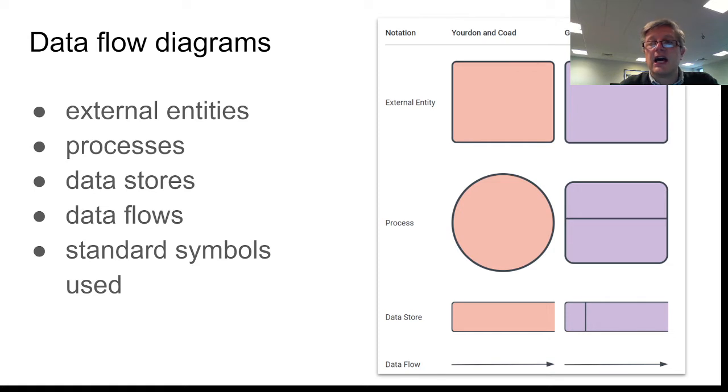The external entities are the people in the system, usually. The processes are what happens within the system to the data. The stores are obviously where the data is saved on hard disks or cloud storage. The data flows is the information that is moving from one part of the diagram to the next part of the diagram. Usually, the exam board would expect you to be able to recognize what these symbols are, what the different shapes mean, and they also expect you to know the rules around level one diagrams.